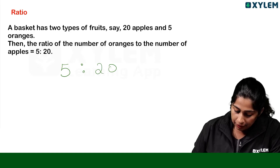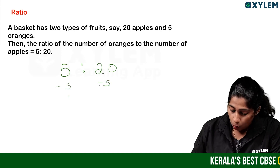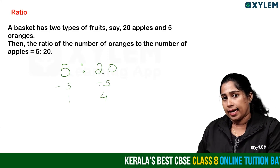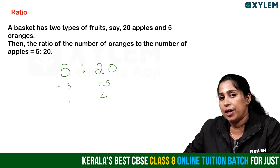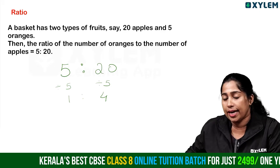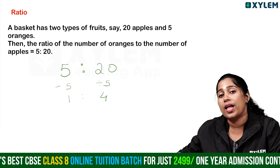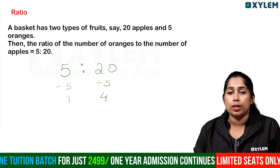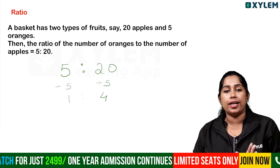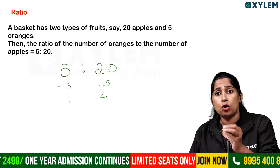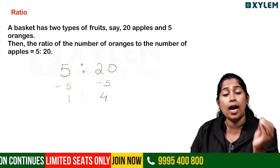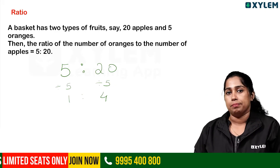Now, let's divide both sides. We can simplify this: 1 is to 4. So the ratio is 1 is to 4. This means for 1 orange in the corresponding item, there are 4 apples.